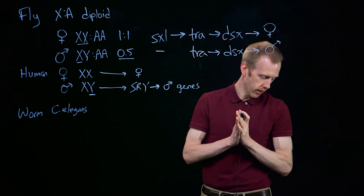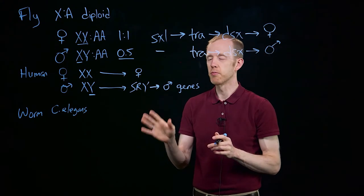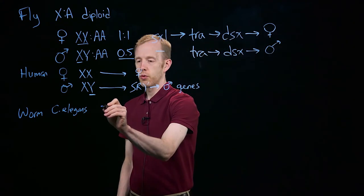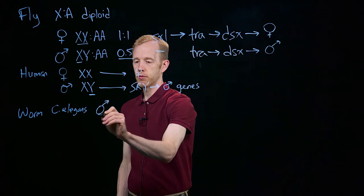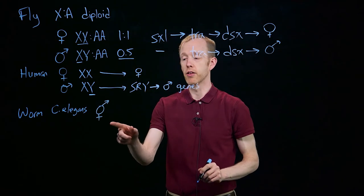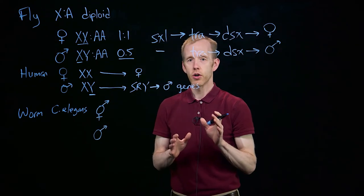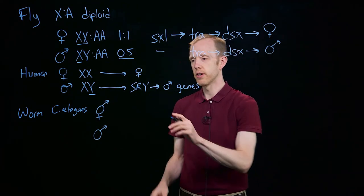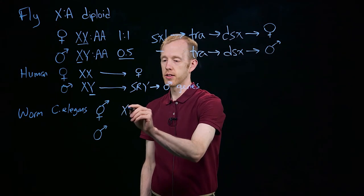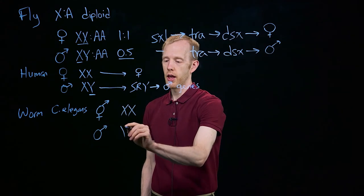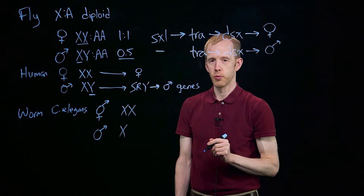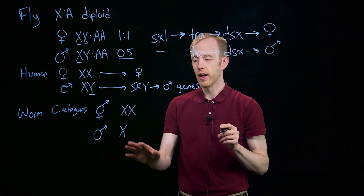Now C. elegans has a couple of different sexes. Instead of males and females, we have hermaphrodites, which is a combination of both the male and the female symbol, and rare males. And there are chromosomes that control this difference as well. Hermaphrodites in C. elegans have two X chromosomes. Males only have one X chromosome, and so they're hemizygous.